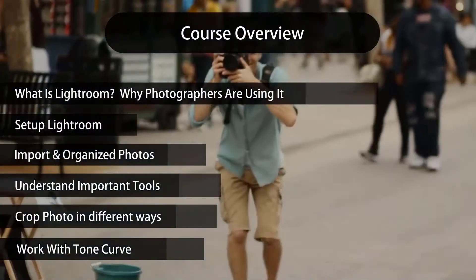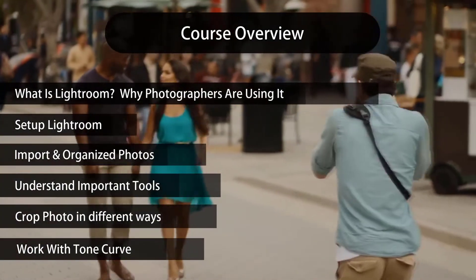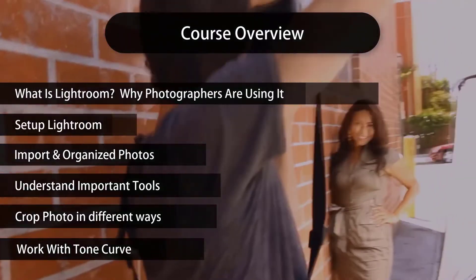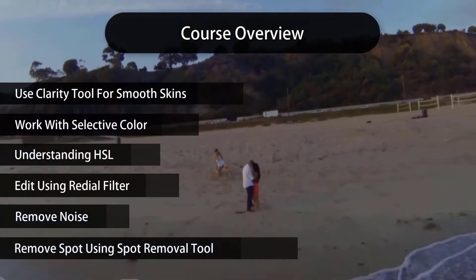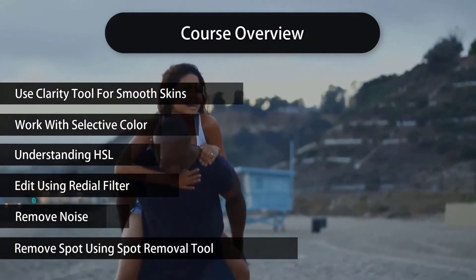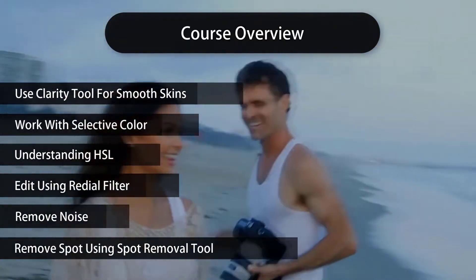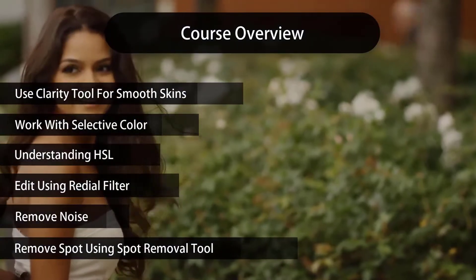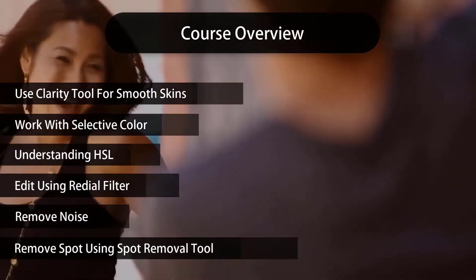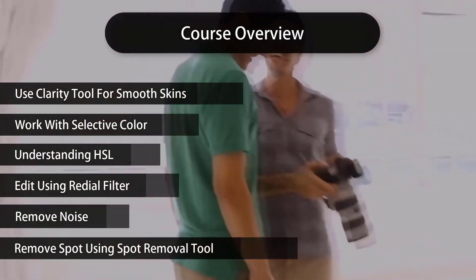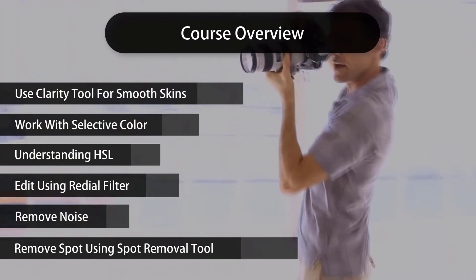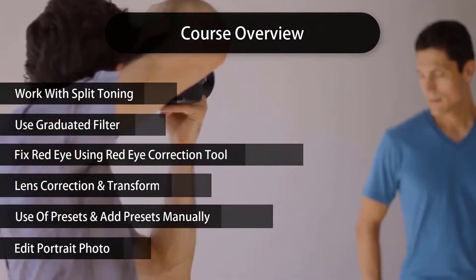We'll understand all the important tools in Lightroom, learn how to crop photos in many different ways, work with the tone curve to get a cinematic look, use the clarity tool for smooth skin, work with selective color, understand HSL — hue, saturation, and luminance — and edit using the radial filter, removing noise and spots from your photographs.